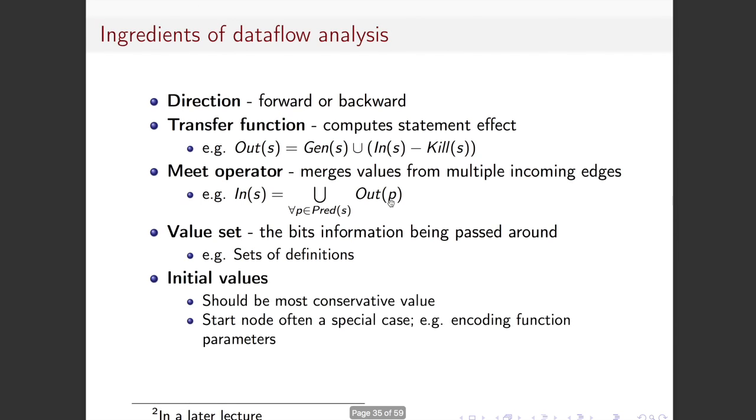So we have a value set, what it is that's been moved around, we need to know the initial values. These are the most conservative values you can get. And we sometimes have the situation where the start node, or maybe the end node if you're a backwards one, have different set of information, often encoding the parameters of the function or something like that to start you off. Is that happy?